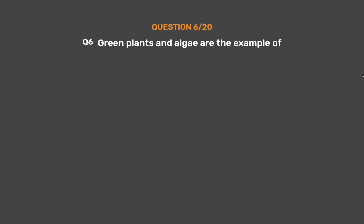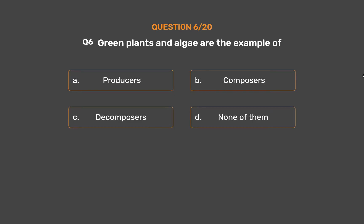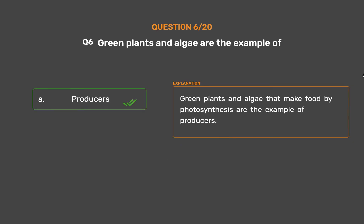Question number 6: Green plants and algae are the example of — Option A: Producers, Option B: Composers, Option C: Decomposers, Option D: None of them. The correct answer is Option A, Producers. Green plants and algae that make food by photosynthesis are the example of producers.